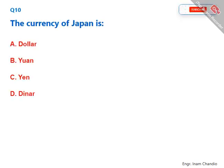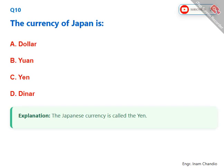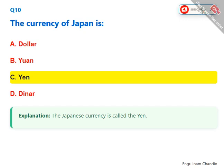The currency of Japan is? The Japanese currency is called the Yen. The correct answer is C. Yen.